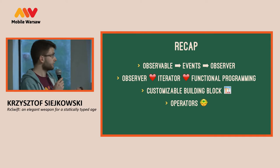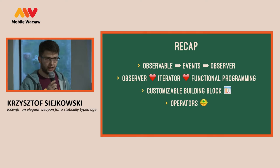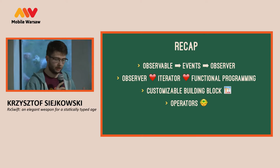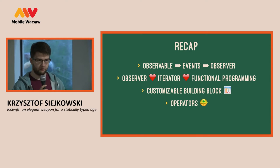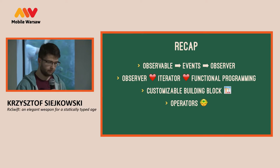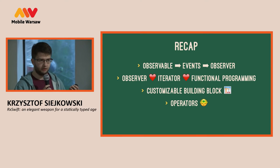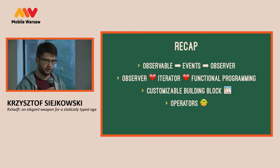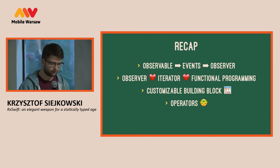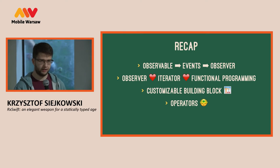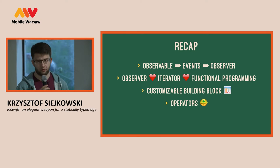Let's recap. RxSwift is a library that provides you with an observable and observer, and a set of tools to work with them. An observable has to emit a stream of events, and the observer has to consume a stream of events. It was designed to combine ideas from a few different concepts and provide a unified API. It can be seen as a basic building block that you can build your logic out of. And there is a huge number of operators that you can use to work with observables.